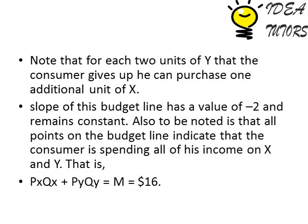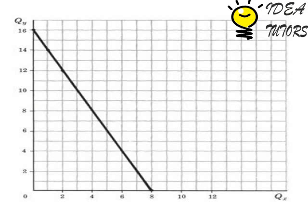The negative sign in the slope is because we have to give up some amount of one good to acquire more units of the other. Also to be noted: all points on the budget line indicate that the consumer is spending all of their income on X and Y — that is, Px times Qx (total expenditure on X) plus Py times Qy (total expenditure on Y) equals M, the income of $16. Here we can have a good look at the diagram.